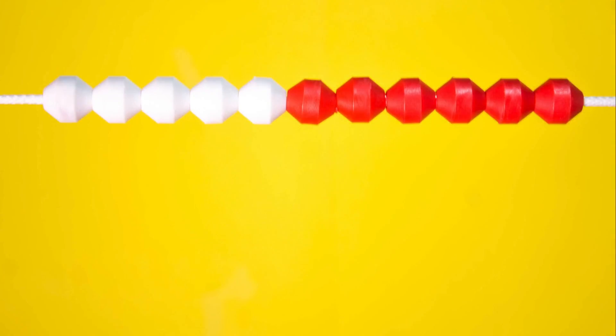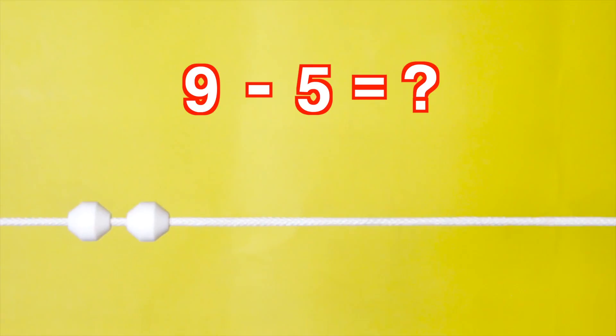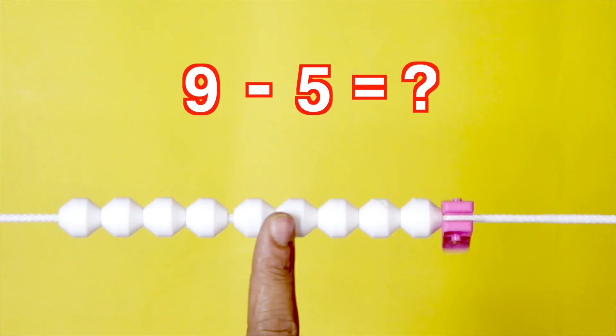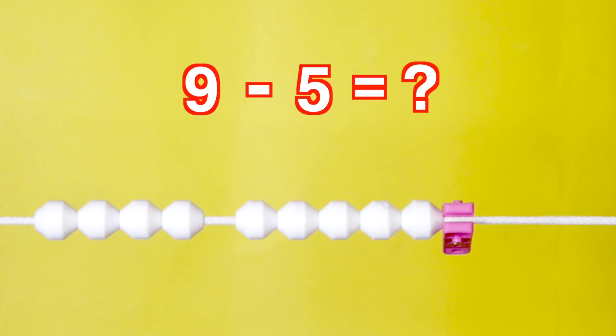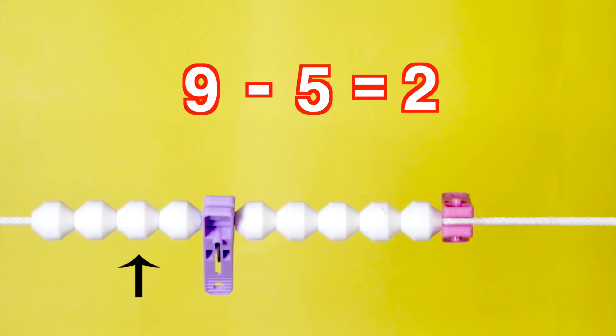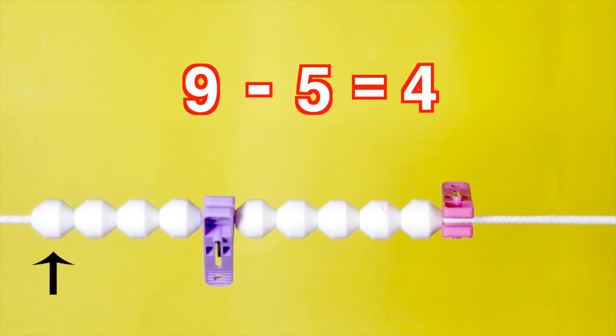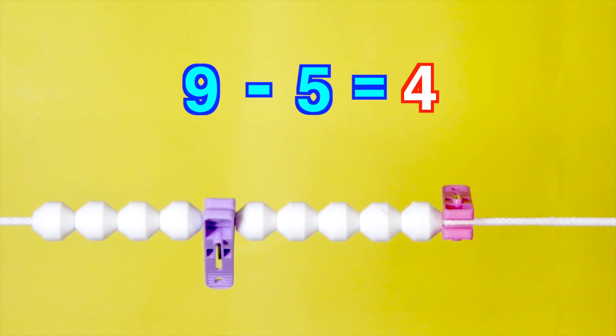The number line is also very useful to teach the concept of subtraction. To find 9 minus 5, ask students to count 9 beads on the number line and mark with a clip. Next, count 5 beads backwards and place another clip. Now, count till the beginning of the line. From 9 we have taken away 5. We are left with 4.